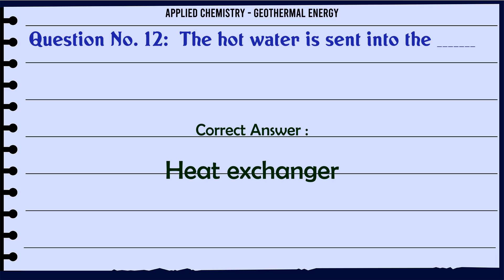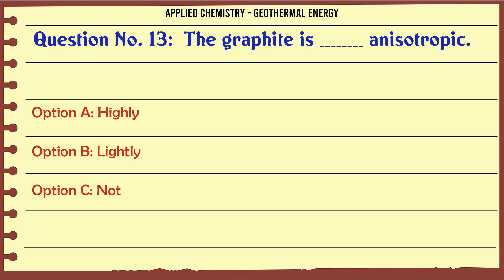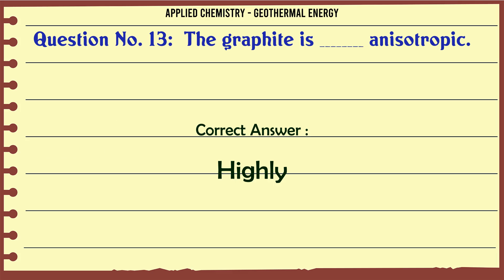Graphite is anisotropic: A: Highly, B: Lightly, C: Not, D: Very less. The correct answer is highly.